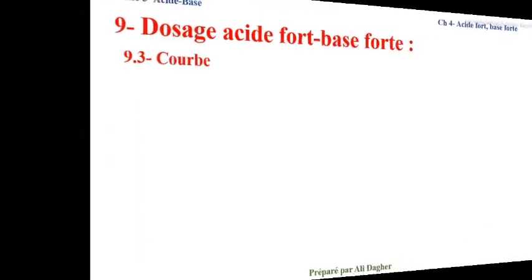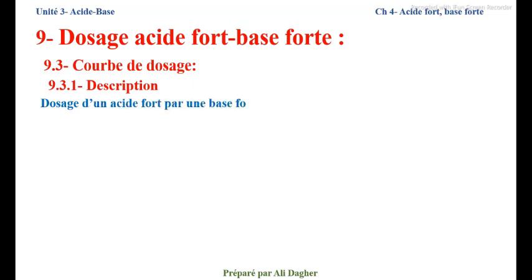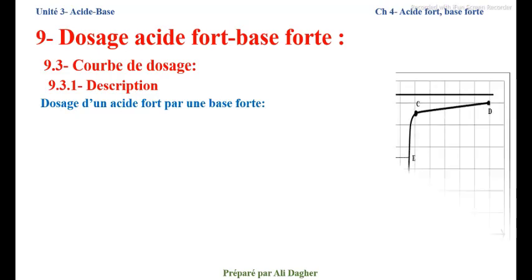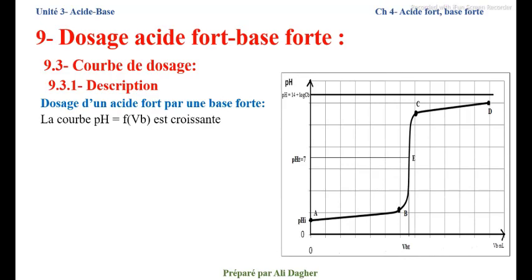Maintenant, courbe de dosage — description. Tout d'abord, dosage d'un acide fort par une base forte : c'est-à-dire que dans le bécher on met l'acide fort. C'est l'allure de la courbe. La courbe pH = f(VB) est croissante.